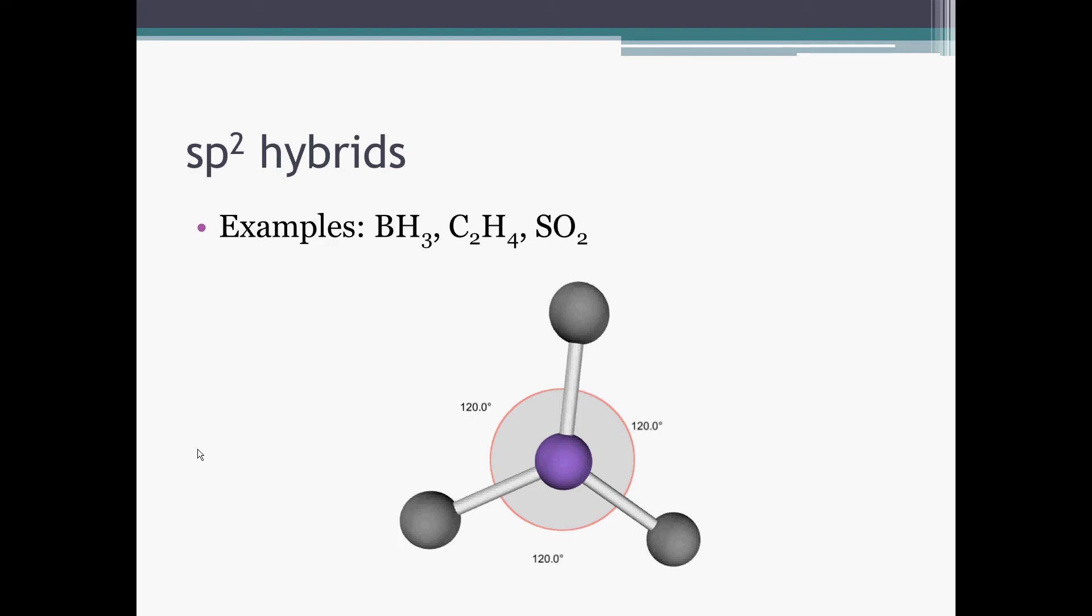In an SP2 hybrid geometry, we're now having three hybrid orbitals, three sigma bonds, and that still gives us a planar arrangement. This is called a trigonal planar, trigonal from the triangle shape that you see here. And the bonds are 120 degrees apart.